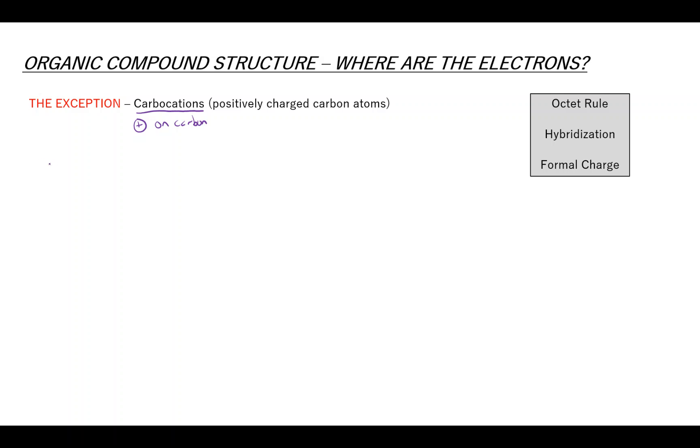So a carbocation is a positively charged carbon atom, and it is a violation of the octet rule. It only has six electrons surrounding the carbon. And so this is, of course, incredibly unstable and reactive.